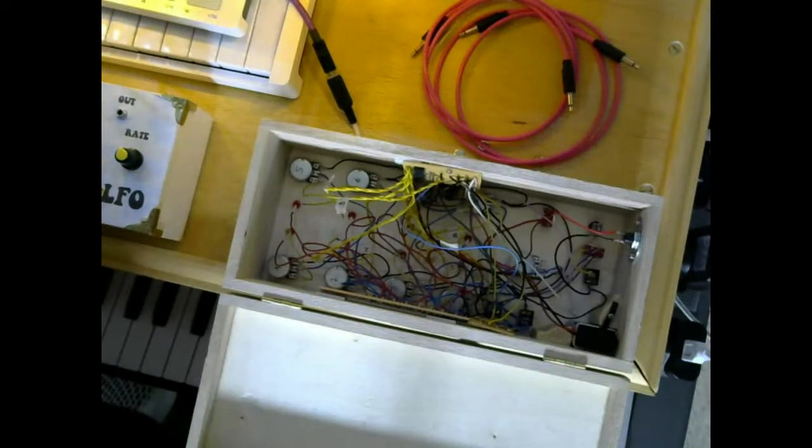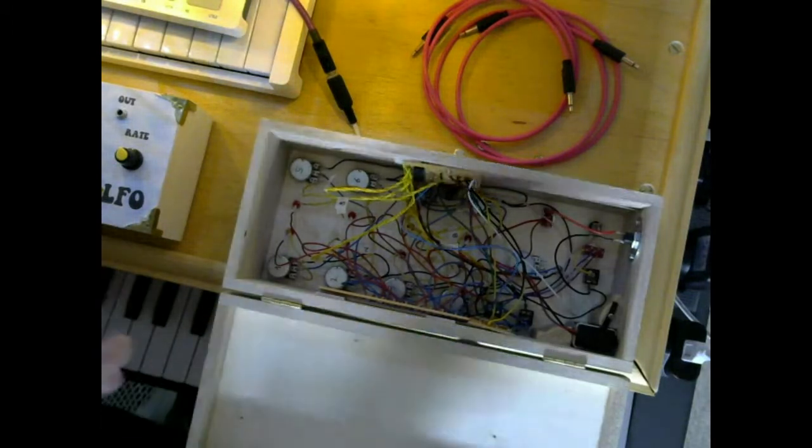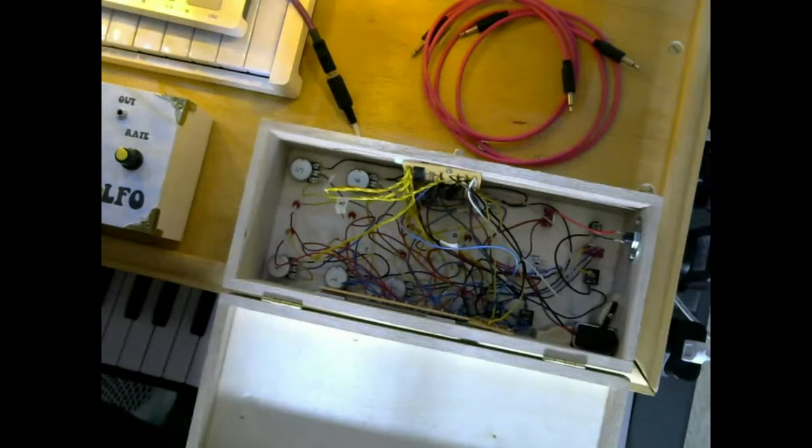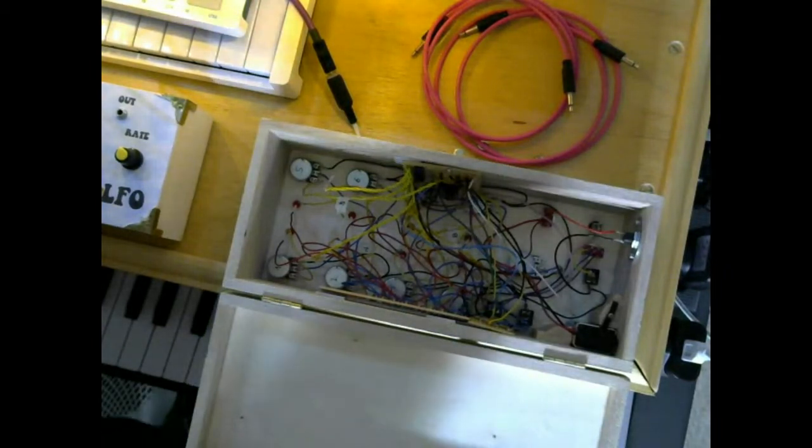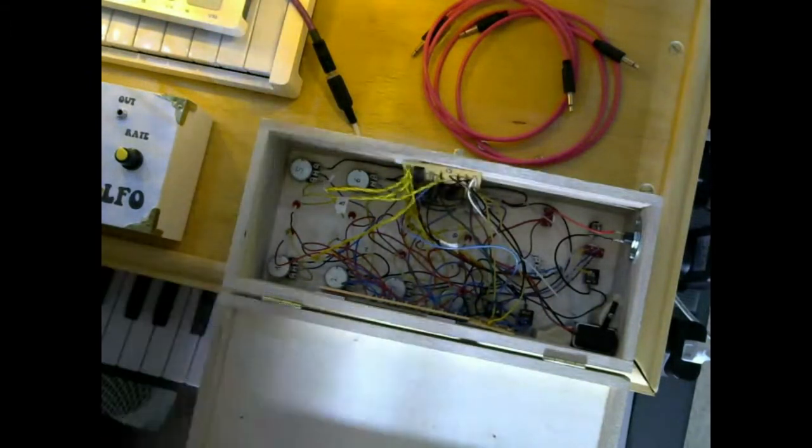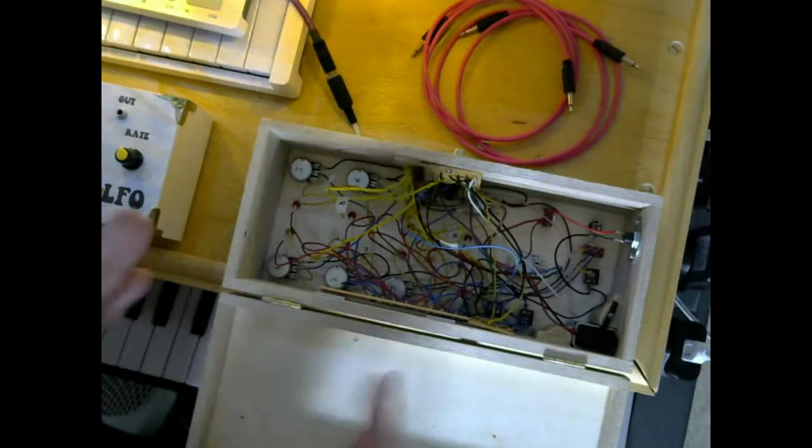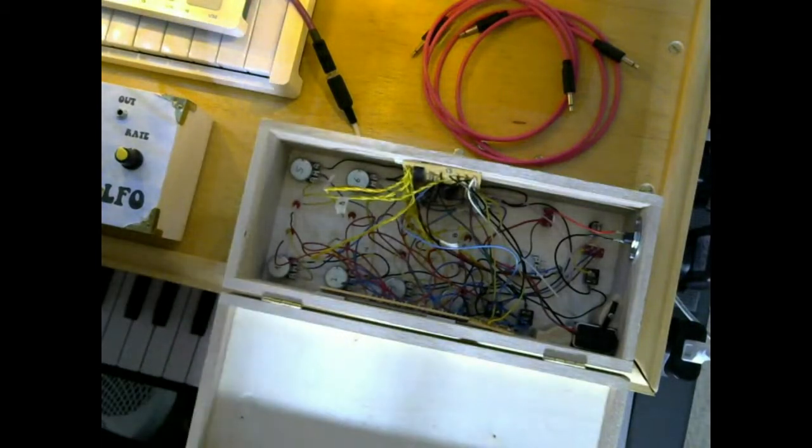Now decade stands for 10 but this is an eight step sequencer. You could actually get 10 steps out of this but for musical purposes we tend to break things up into groups of four, for four four time which is what most of the popular music you listen to is recorded in. So I've broken it down to eight which gives me two banks of four and I just reset the chip once it gets to that position.